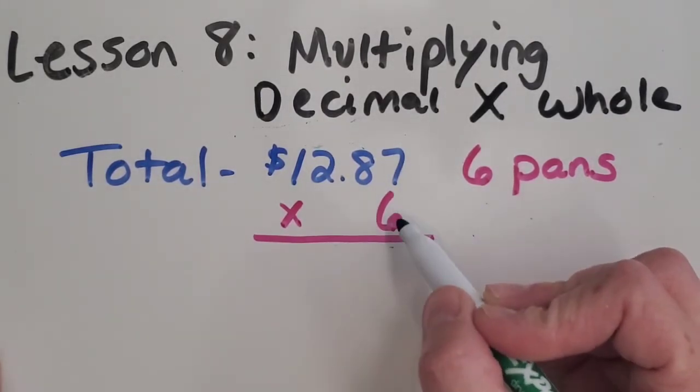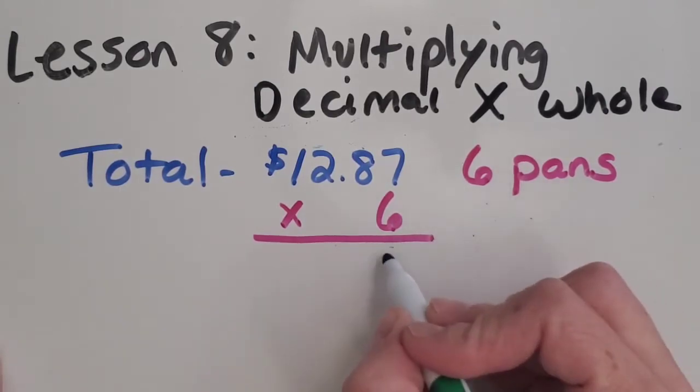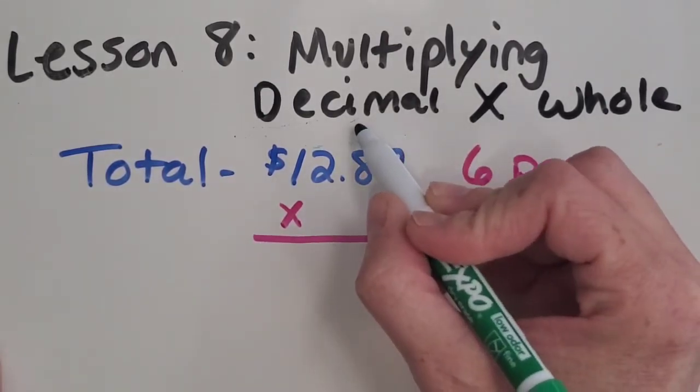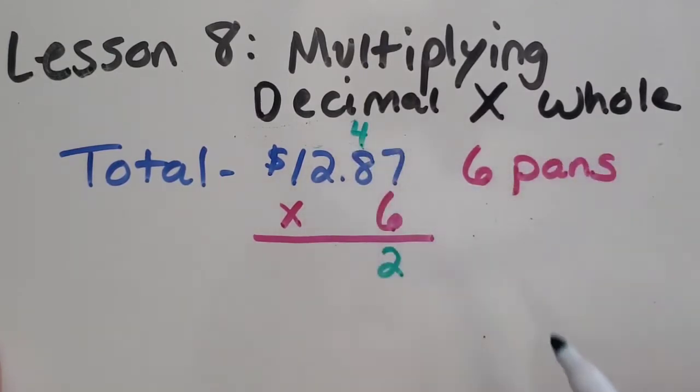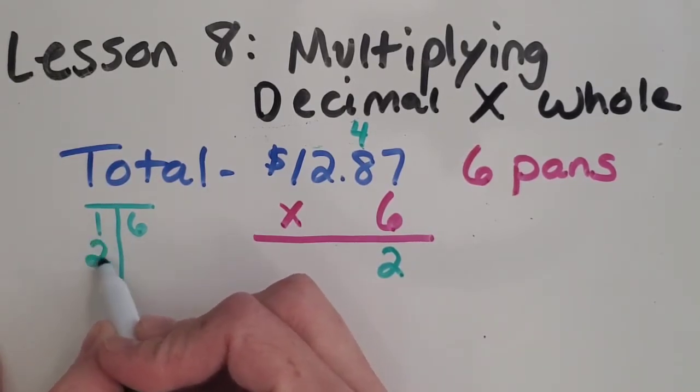So we want to make sure we multiply all of these digits times the six. And we're going to start the same way. So seven times six, you got it is 42. Now, if you're having trouble with remembering your six facts, this might be another good time to make yourself a little t-chart.